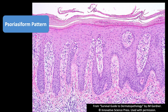In psoriasis, unless it's been previously treated with steroids — which can make it look unusual or non-classic — this is the classic example. The loss of the granular layer usually goes hand in hand with parakeratosis anywhere in dermatopathology, and that means the epidermis is growing too rapidly. It doesn't have time to develop a granular layer.